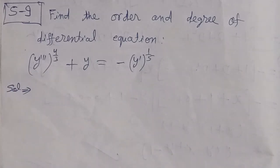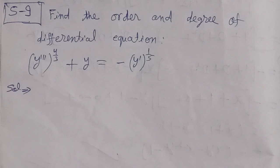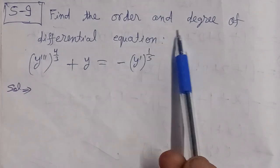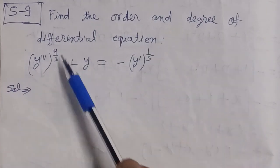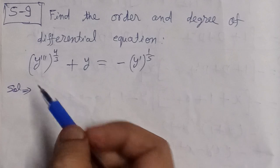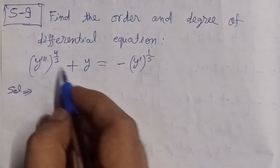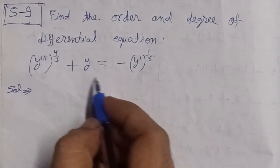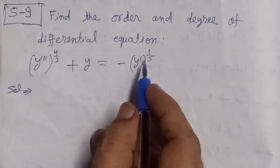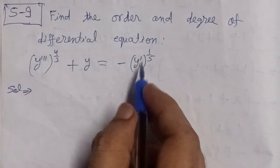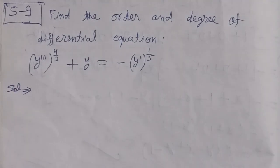Bismillahirrahmanirrahim. The problem is of a differential equation: find the order and degree of the differential equation y triple dash whole power 4 by 3 plus y is equal to minus y dash whole power 1 by 5.